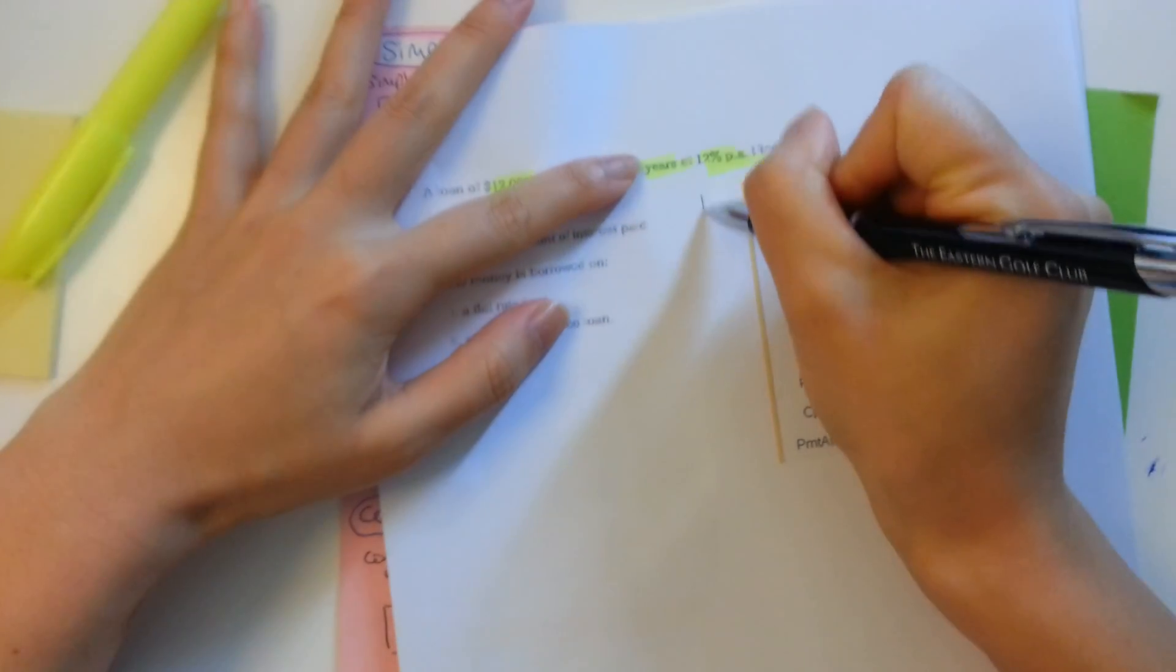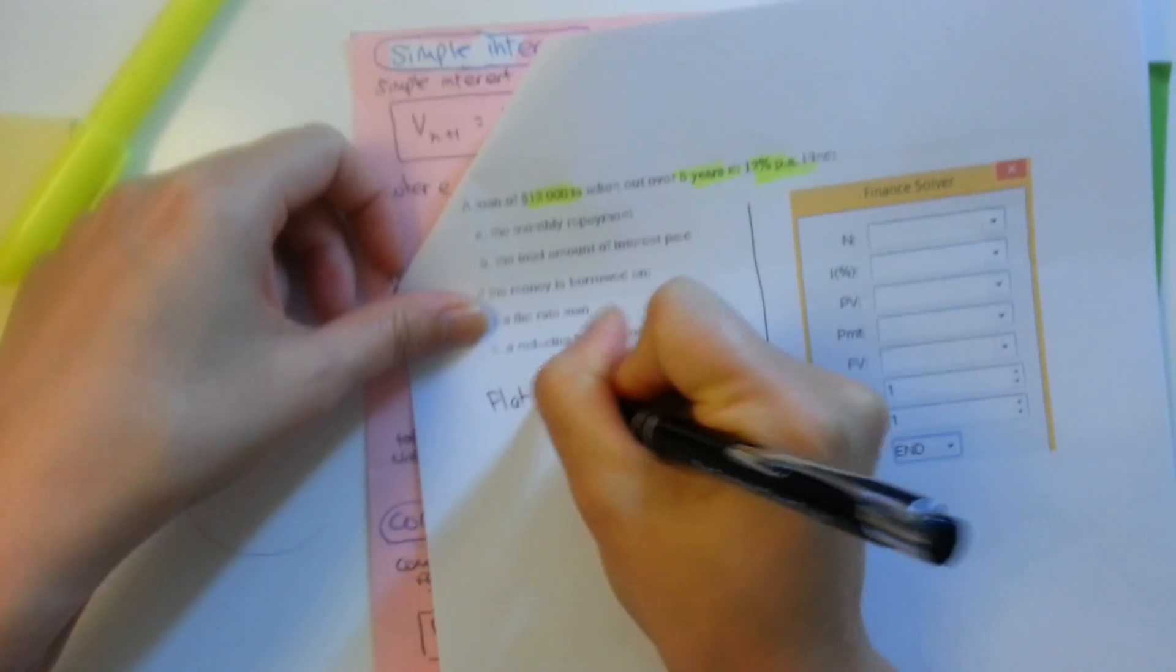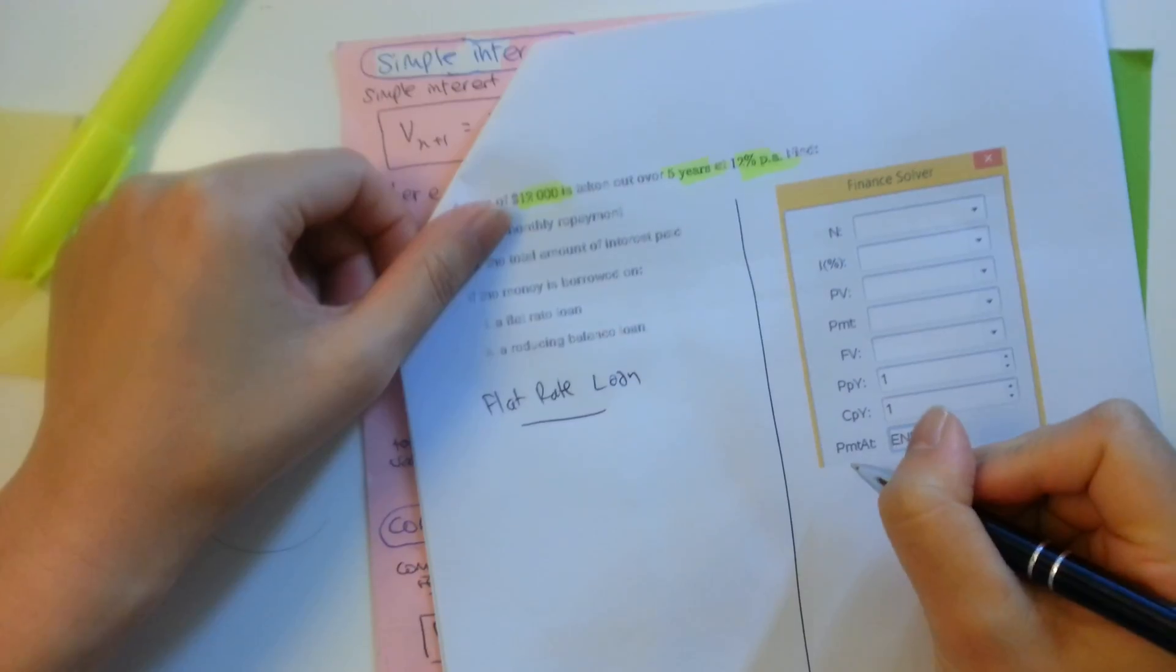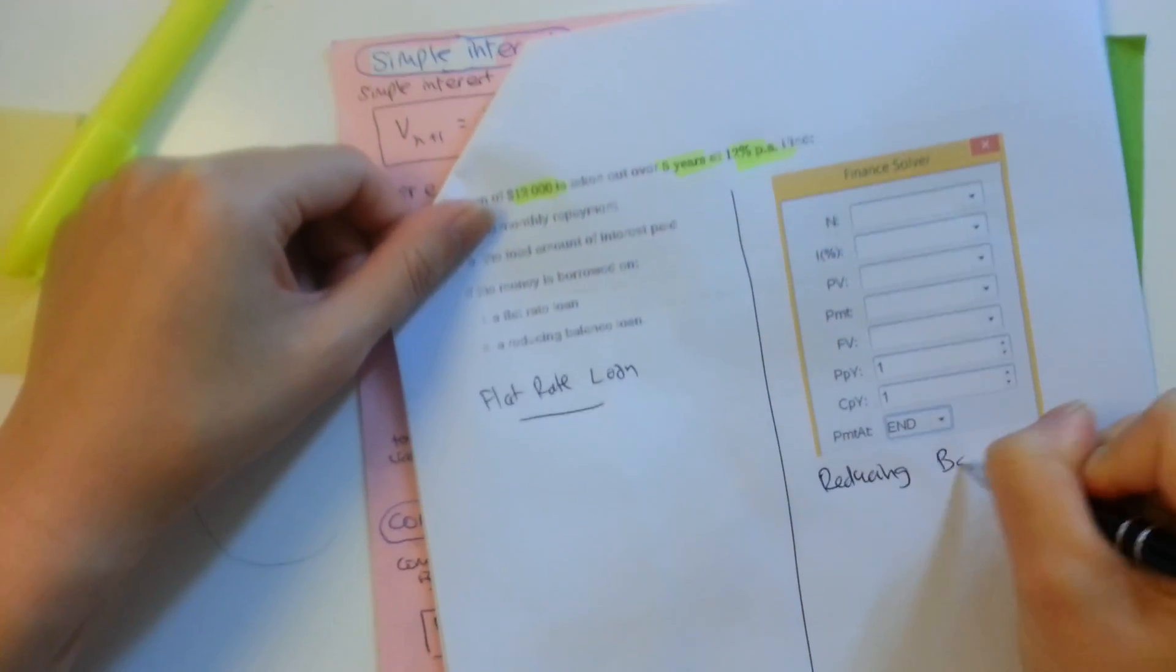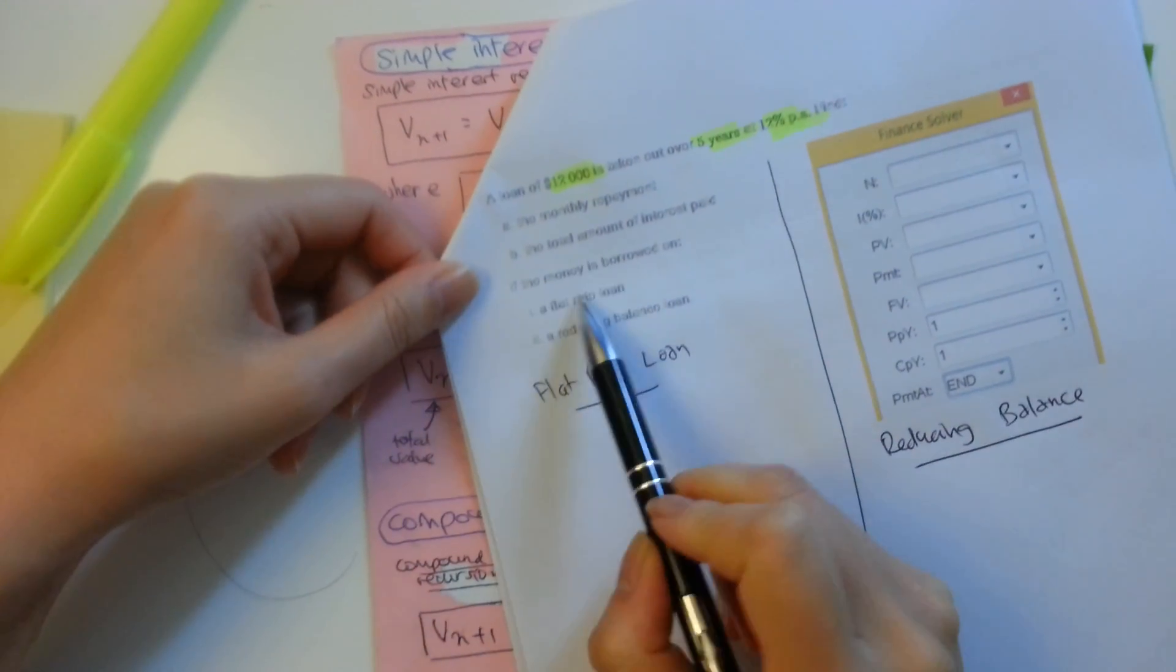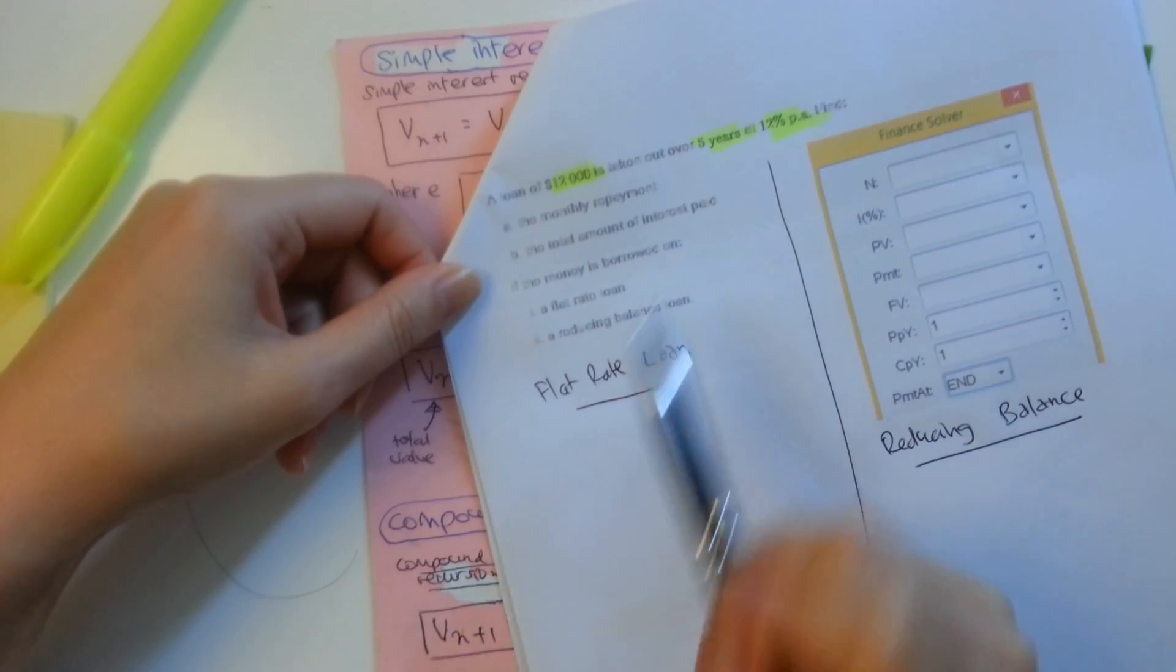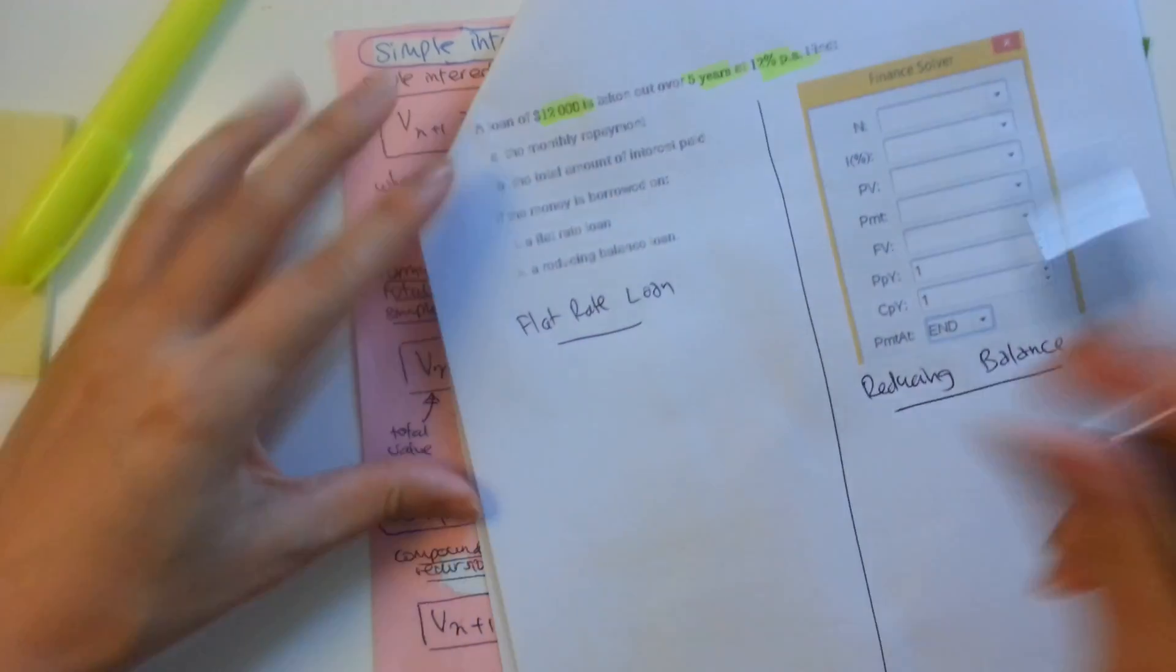I'm going to split my page into half. And on one side, I'm going to do flat rate. And on the other side, I'm going to do reducing balance. So what we need to find for both of these conditions is the monthly repayment. So how much do we have to pay each month and the total amount of interest to be paid. So for flat rate loan, we're going to use our simple interest formula.